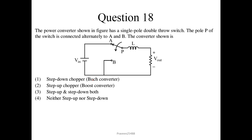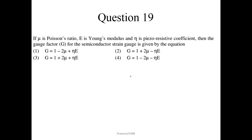Question number 18. The power converter shown has a single pole double throw switch. The pole P is connected alternately to A and B. This shows the characteristic of a step-down chopper, so option 1 is the correct answer. Question number 19. If μ is the Poisson ratio, E is Young's modulus, and θ is the piezoresistive coefficient, the gauge factor for the semiconductor strain gauge is G = 1 + 2μ + E·θ. Option 3 is the correct answer.